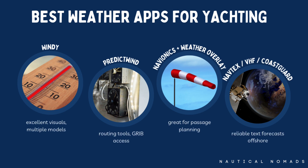That's where apps come in. Tools like Windy and PredictWind make accessing this data simple and visual. Windy lets you overlay different models and compare them in real time. PredictWind gives you routing suggestions and downloadable GRIBs. NavX, when paired with a weather overlay, is perfect for coastal sailing and anchorage planning. And don't forget the basics — VHF weather broadcasts, NAVTEX, and Coast Guard bulletins are still incredibly reliable, especially when offshore or out of cell range.